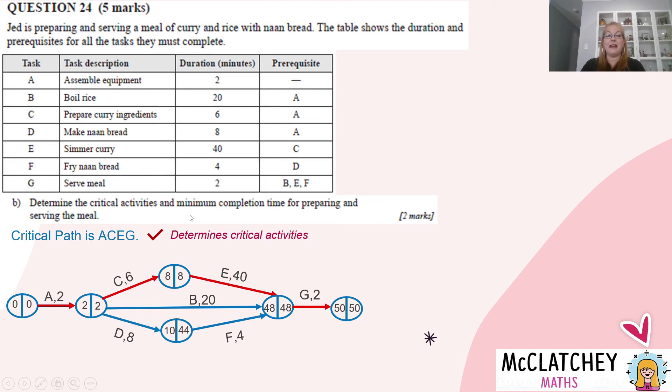And the next part is what's the minimum completion time? Well, we can see that here. The earliest you can get this meal done is in 50 minutes. So the minimum completion time will be 50 minutes. Make sure you use your units of measurement there. So that's our final mark. Notice here it included the unit. So if you'd left that as just 50, you would not have got your final mark.